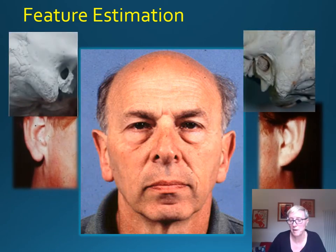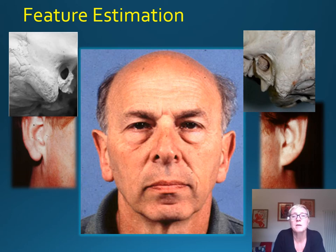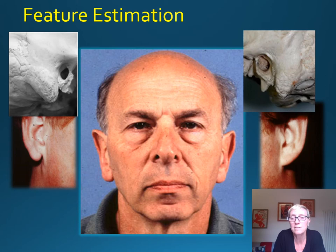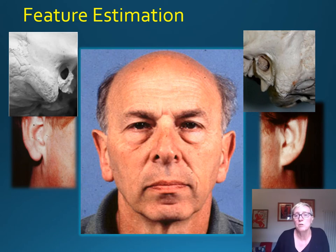The area we know least about is the ears. We can tell whether someone has ear lobes or adherent ears — a lobe on the left and an adherent ear on the right — because of the position and direction of a bony lump on the base of the skull called the mastoid process. We know where ears sit because of the position of the external auditory meatus, or ear hole, and roughly the size of your ear is similar to the height of your nose. But the detail of the ear is largely unknown, and we tend to use average modelled ears to help with the facial depiction.